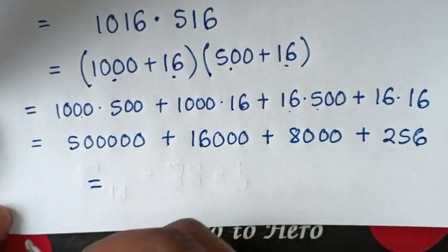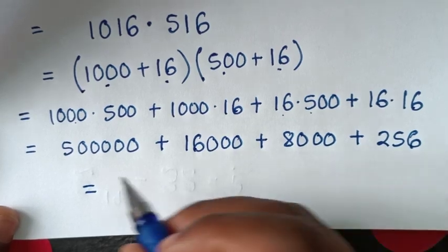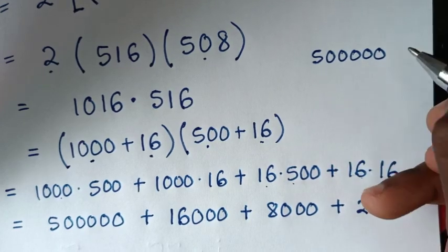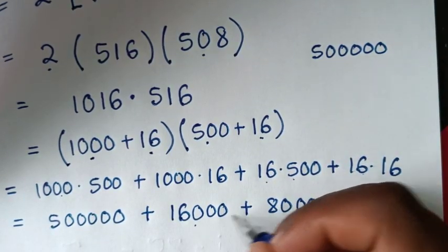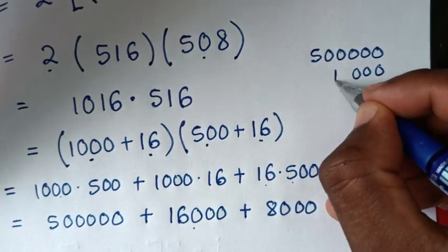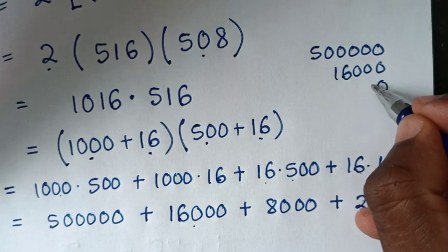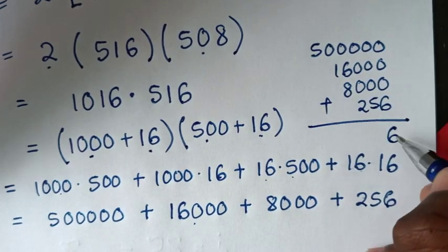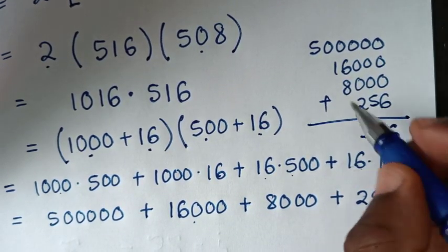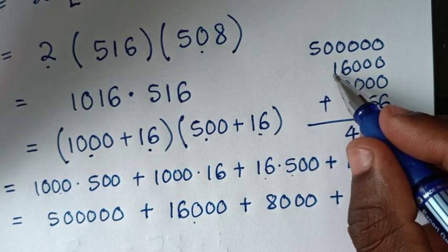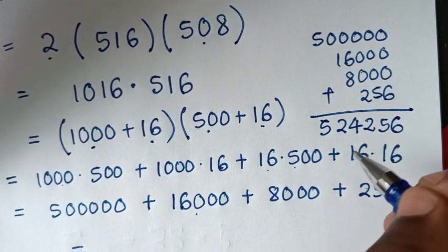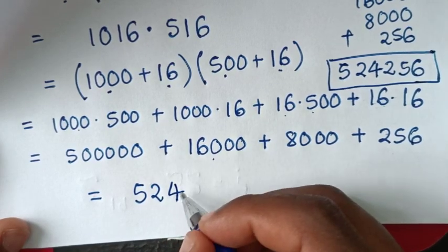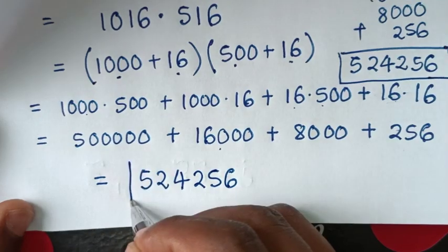Adding these together: 500000 plus 16000 plus 8000 plus 256. The sum gives us the final answer: 524,256.